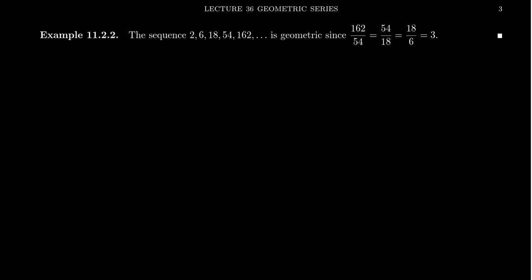For example, take the sequence 2, 6, 18, 54, 162. The first term a is 2, that's just the first term in the list. If you look at consecutive terms, 6 divided by 2 equals 3. That's our candidate for the constant ratio r.